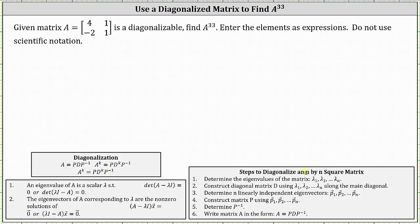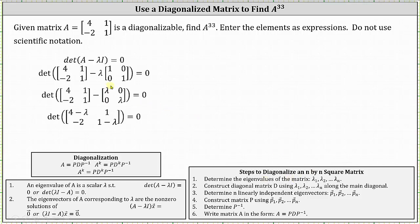To start to diagonalize matrix A, we need to find the eigenvalues of matrix A. We do this by solving the equation: the determinant of the difference of matrix A and the product of lambda and the identity matrix equals zero, which I've already set up below.